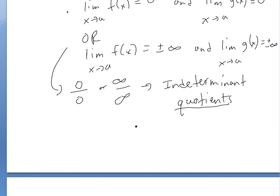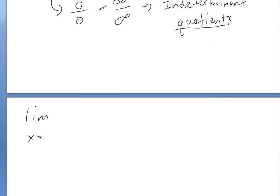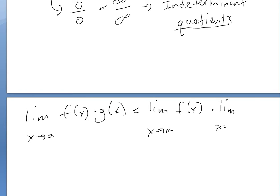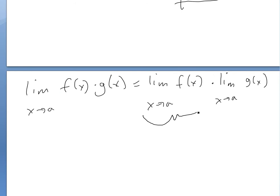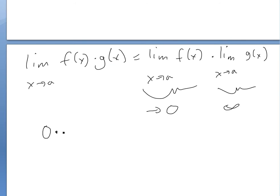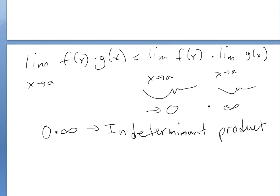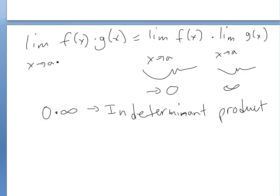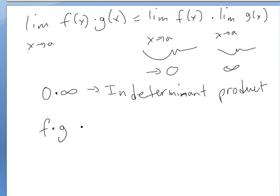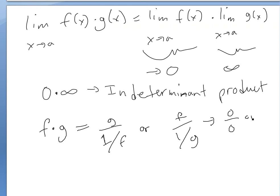L'Hôpital's Rule applies only to those quotient forms. But if you have a limit of f(x) times g(x) as a product, where the limit of f(x) approaches 0 and the limit of g(x) approaches infinity, you get an indeterminate product of the form 0 times infinity. L'Hôpital's Rule doesn't directly apply here, but we can rearrange the product f·g to equal either g divided by (1/f) or f divided by (1/g).